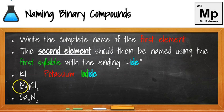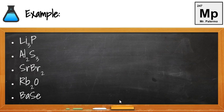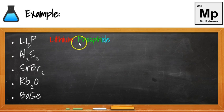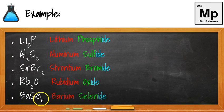Mg is magnesium — write the full name. Chlorine: take the first syllable "chlor" and add "-ide" ending. Calcium, take the full name, and for the negative anion, nitrogen gives us nitride. Li on the reference table is lithium; phosphorus becomes phosphide, so it's lithium phosphide. Al is aluminum, and sulfur becomes sulfide. Here we have strontium, and bromine becomes bromide. Rb is rubidium, and oxygen becomes oxide. Ba is barium, and selenium becomes selenide.